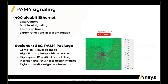Here's an example from our customer Socionext: a PAM4 package that enables 56 gigabits per second data rates, defining a new set of challenging design requirements. We are looking at a highly complex 14-layer package with extreme levels of 3D complexity, which includes micro vias. Typical metrics customers look to address are insertion loss, return loss, and a tight crosstalk design requirement.